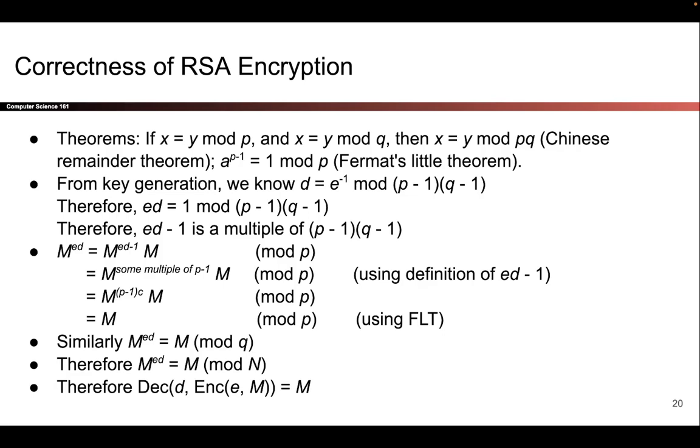But we're not done. We also need to show that this is true mod q. That was our original strategy. We broke this up into mod p and mod q lands. So to show that this is true mod q, we simply have to do all the same steps, but replacing all the p's with q's. So the first step is to take M^ed, rewrite it as M^(ed-1) times M. That's just exponent rules. It works in mod q land as well. Then we can write that ed-1 is some multiple of q-1, taking the p, replacing it with q. So ed-1 is also a multiple of q-1, as we showed earlier.